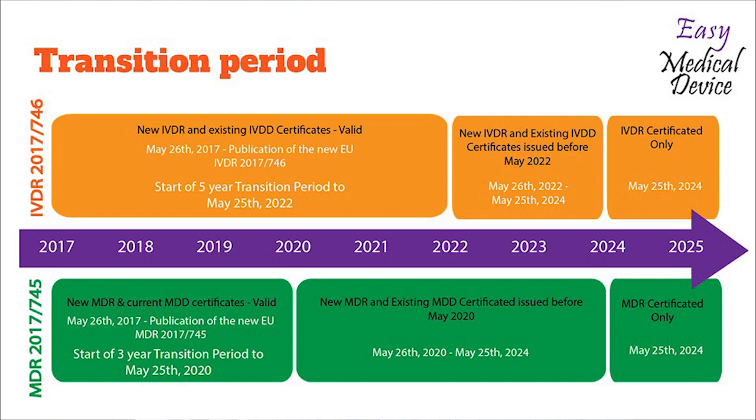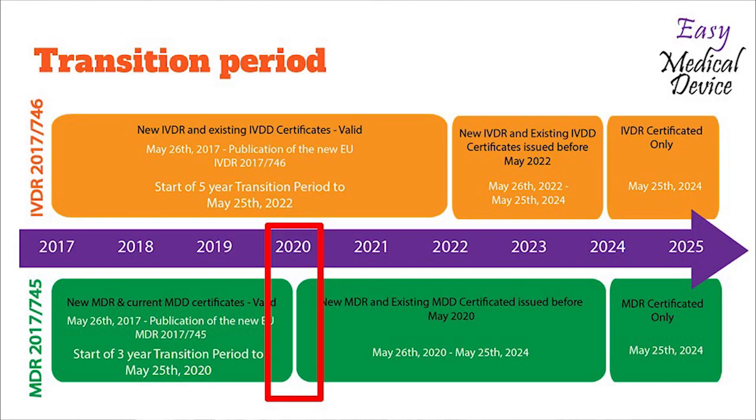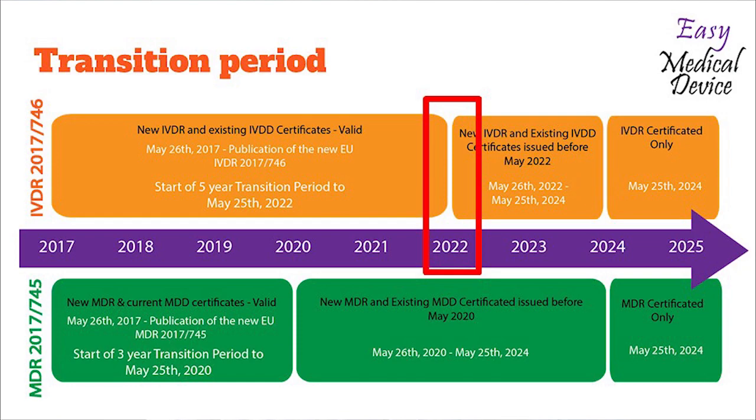They have both different transition periods. The medical device regulation has a transition period of three years, meaning companies have to transition and understand the regulation before it becomes applicable — the first transition date is May 25, 2020. For the IVDR, the transition period is five years, so the start of the IVDR is on May 25, 2022.